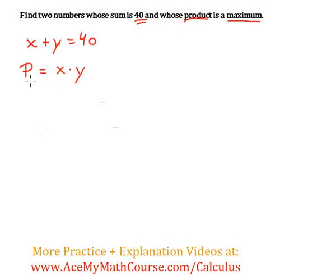We want to maximize P and I want to get rid of either x or y. So what I'm going to do here is that I will isolate either variable and plug it in for the product function.